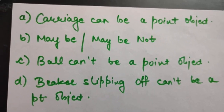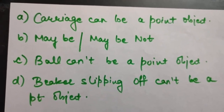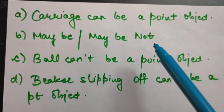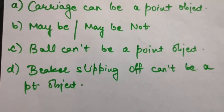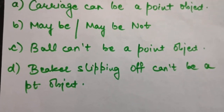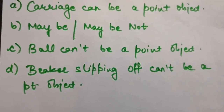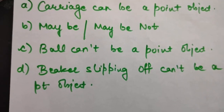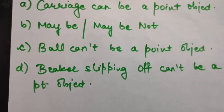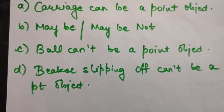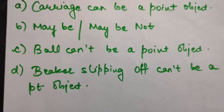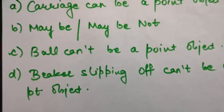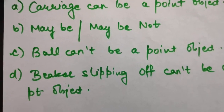Second, a monkey sitting on top of a man cycling on a circular track. Whether the monkey can be considered a point object depends on the radius of the circular track. If the radius is very large, the distance covered is large and the monkey can be considered a point object, but not if the radius is very small.